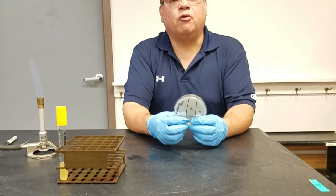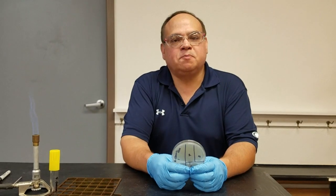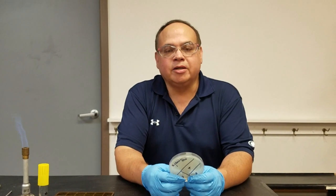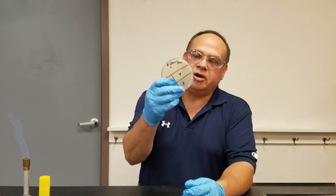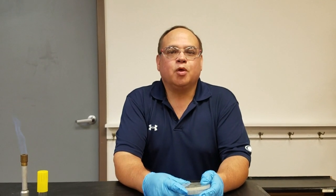So again, this is the streak plate method for isolation. It takes a large population of microorganisms and dilutes it using the entire surface area of the plate so that you get isolated colonies which you can use to further study whatever organism you're working with. Thank you.